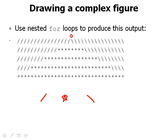Usually we have an outer for loop that represents each line — line number one through five — and then inside that outer for loop we have some inner for loops that print sideways, printing each of the characters on that line.